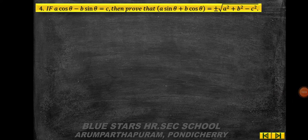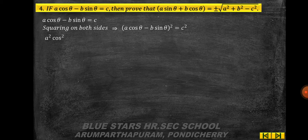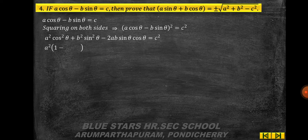Problem 4: if a·cosθ − b·sinθ = c, prove that a·sinθ + b·cosθ = ±√(a² + b² − c²). Squaring both sides: (a·cosθ − b·sinθ)² = c², giving a²cos²θ + b²sin²θ − 2ab·sinθ·cosθ = c².